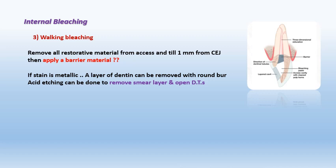The restorative material is removed one millimeter inside the root canal — that is, one millimeter below the cemento-enamel junction — to apply a barrier material. A barrier material, such as glass ionomer, is placed in the floor of the tooth and extends one millimeter inside the root canal. This is very important because without a barrier material, the bleaching agents will leak into the periodontal tissues through the dentinal tubules, which are two-way passages.